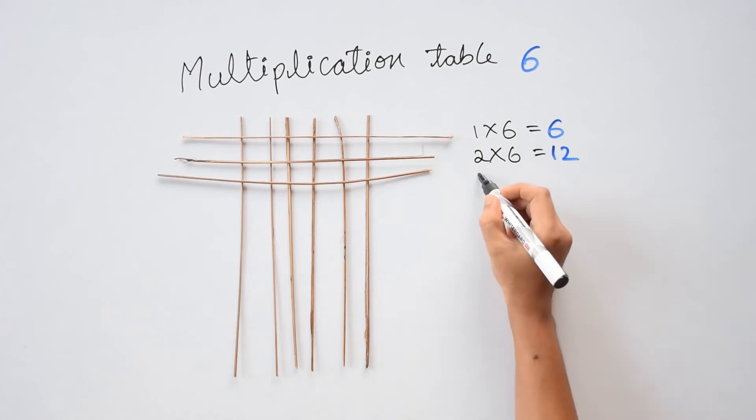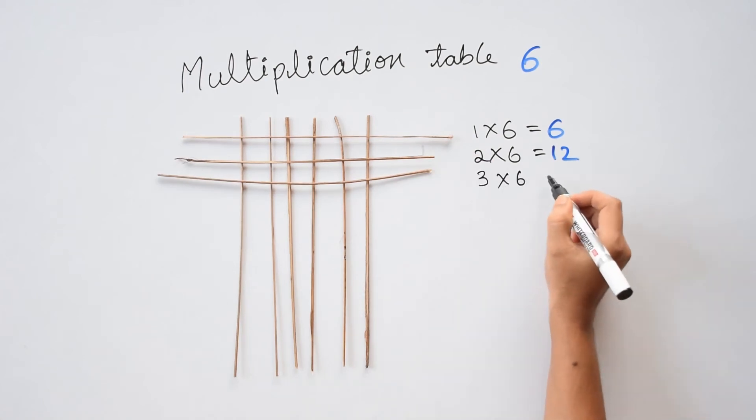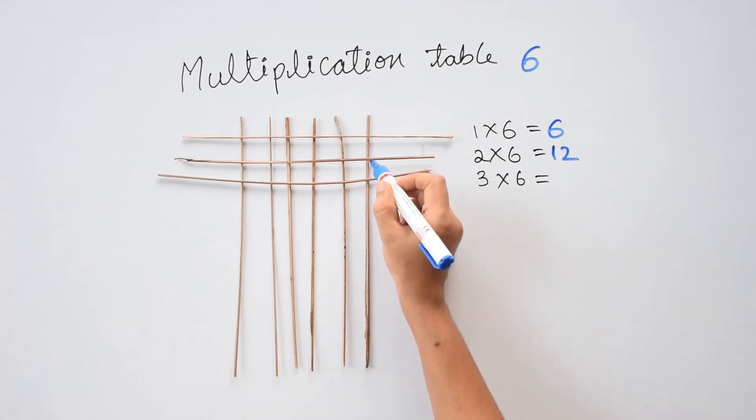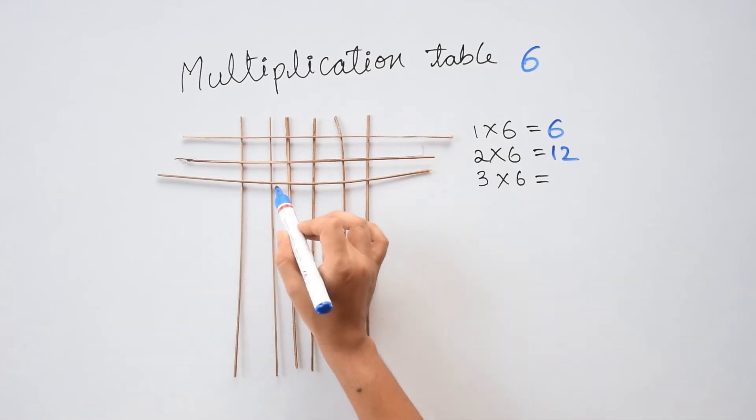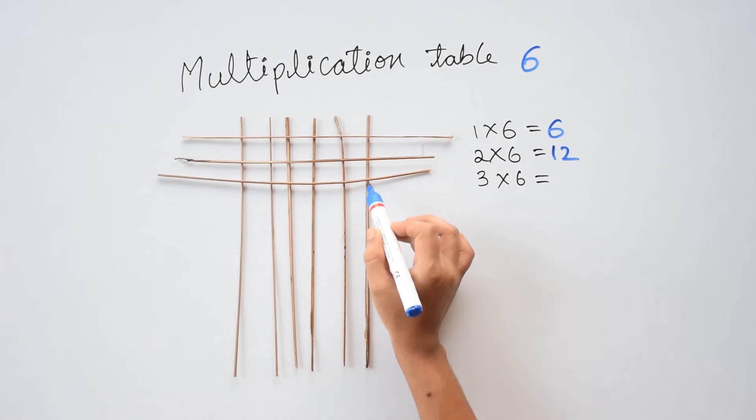Next, 3rd stick, 3 times 6 equals to. Again I have to count the points where they meet. Till here it's 12. Continuing ahead, 13, 14, 15, 16, 17 and 18. 3 times 6 is 18.